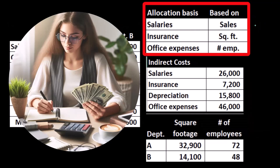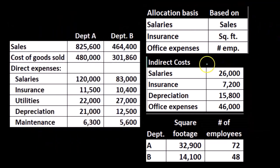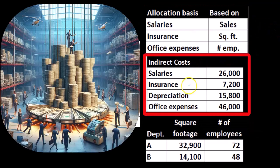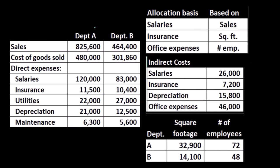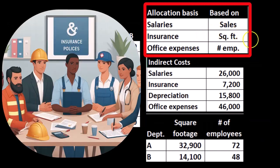We're going to use a percentage to drive that allocation. Then we have the indirect insurance here — this insurance is covering both departments A and B. We need to allocate the insurance to A and B departments in some way, and to do that we're going to use the square footage as a percentage allocation method.